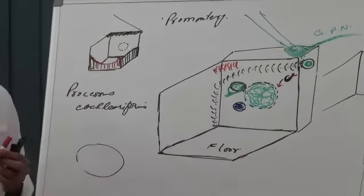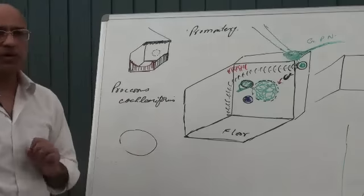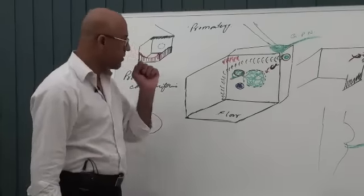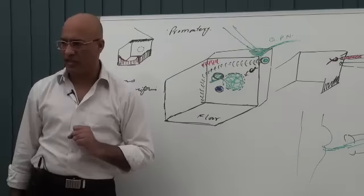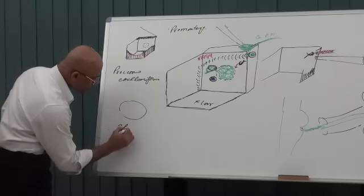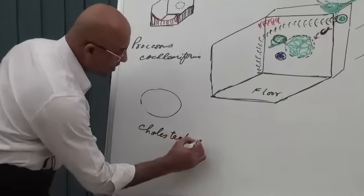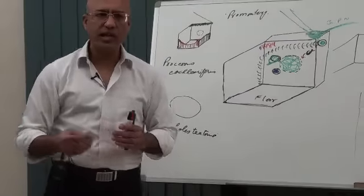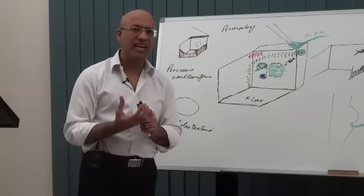The tendon of the tensor tympani passes through the processus cochleariformis. Now, what are the clinical correlates? Why should a doctor know these features? Let's start from the top. If there is some pathology in the middle ear — let's imagine a pathology: cholesteatoma.